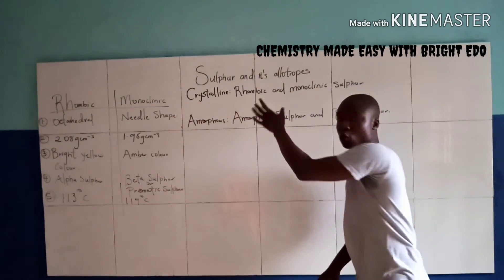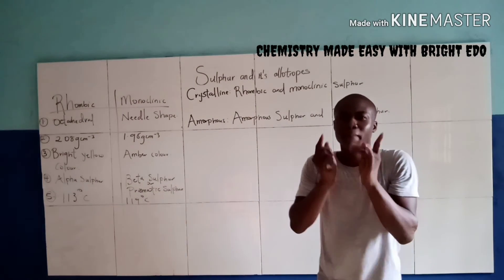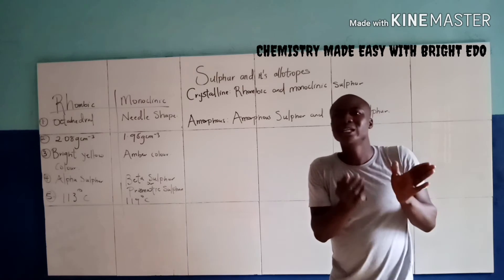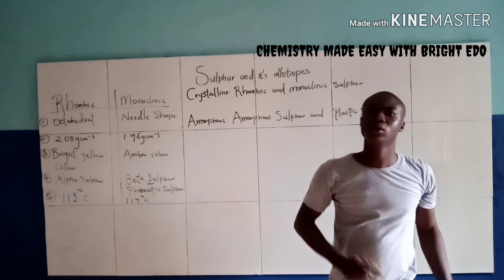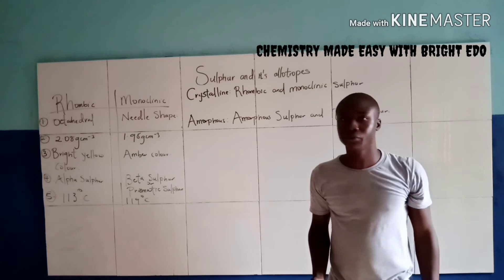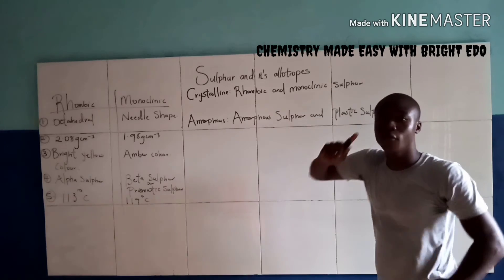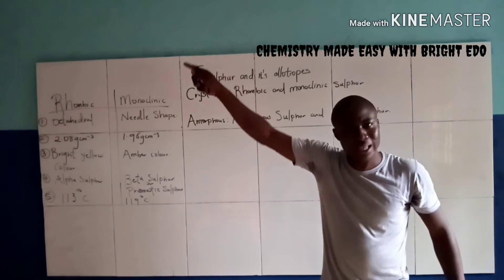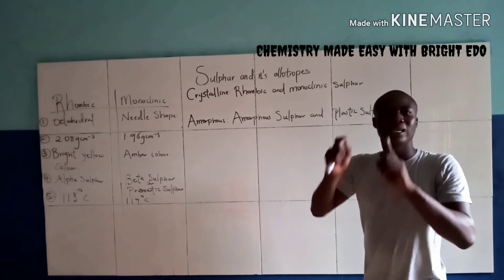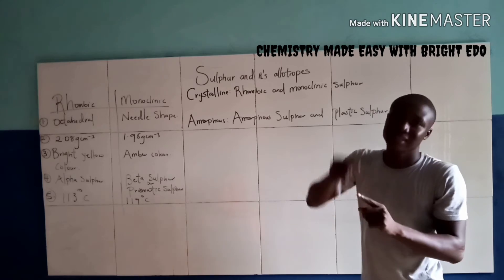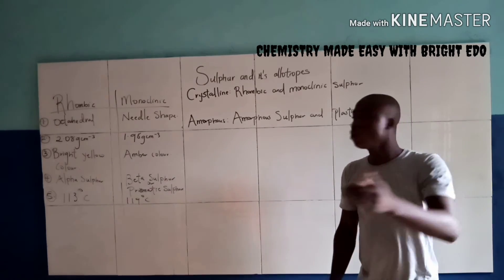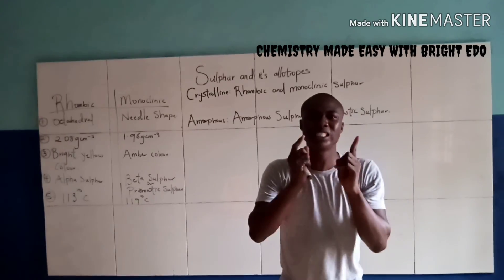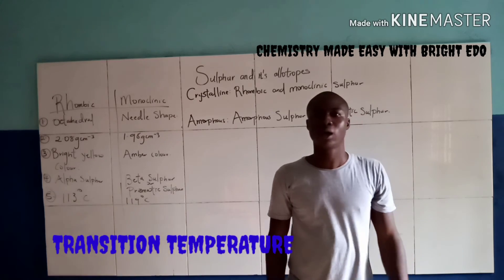Now Rhombic Sulfur exists below a temperature of 96 degrees Celsius. While Monoclinic Sulfur exists above a temperature of 96 degrees Celsius. This temperature is called the Transition Temperature.